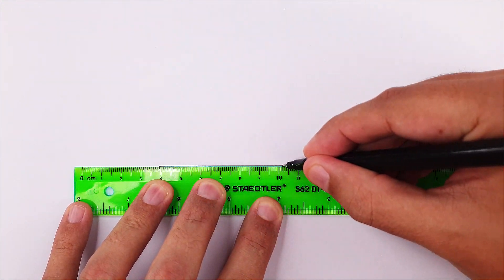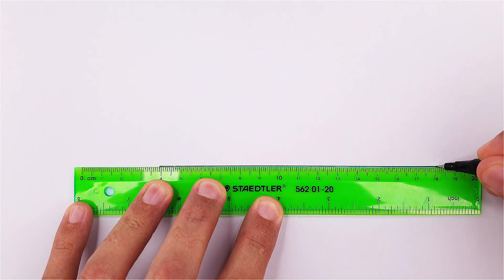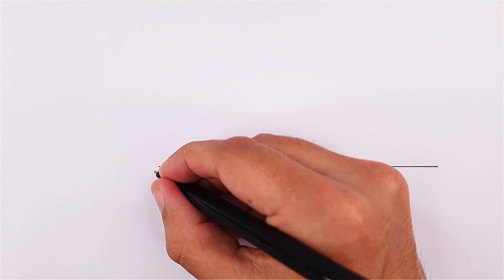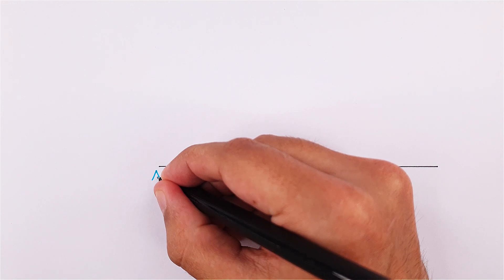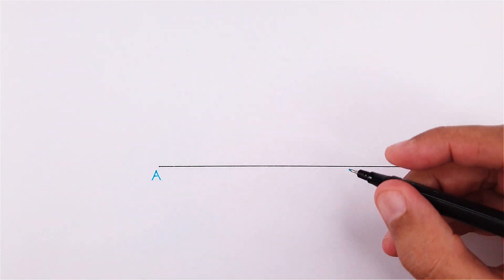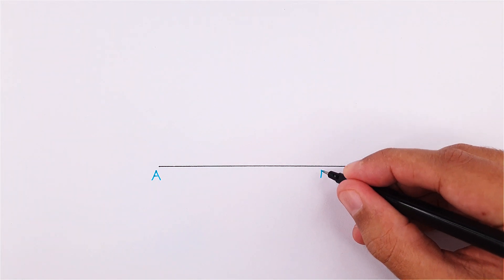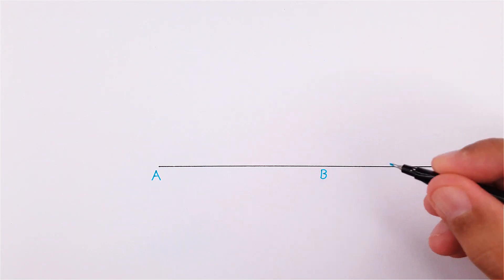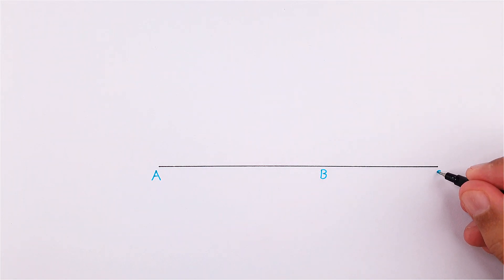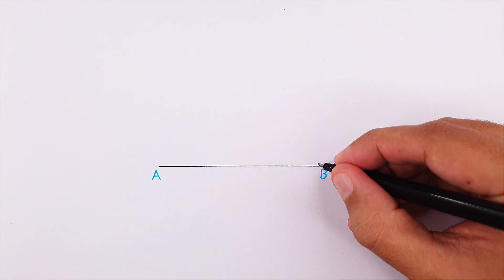In this video we will construct perpendicular lines. We can start by drawing a line and labeling it as line ABC. Point B can be placed anywhere for this exercise.